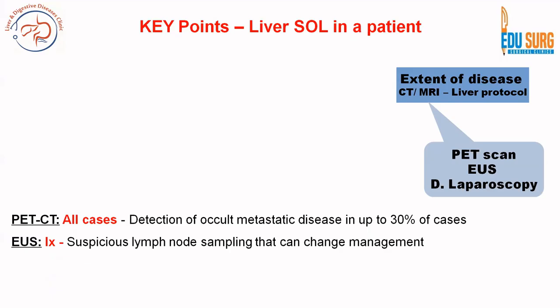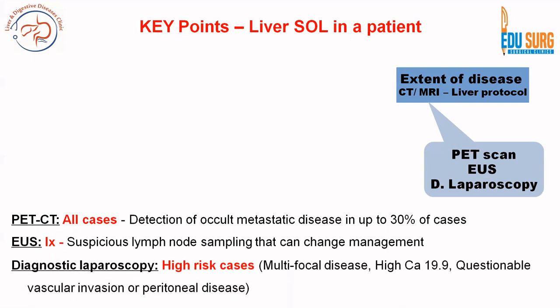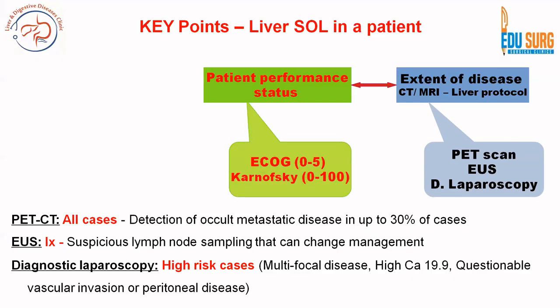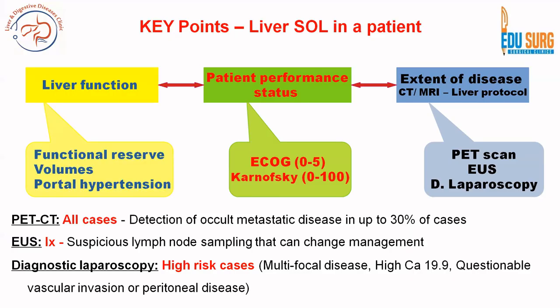Endoscopic ultrasound is primarily for nodal biopsy. Diagnostic laparoscopy is advised in high-risk cases — that is, multifocal disease, questionable vascular invasion or peritoneal disease, and high tumor markers. If there is no metastatic disease and PET scan is negative, you need to assess patient performance status using the ECOG or Karnofsky scale, and also assess liver function — evaluating functional reserve, anatomical and functional volume, and presence or absence of portal hypertension.